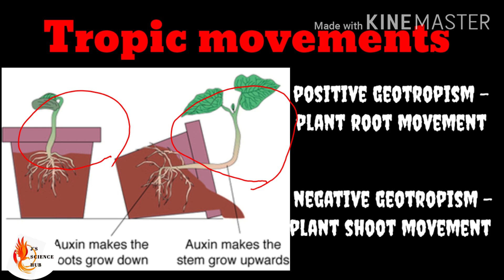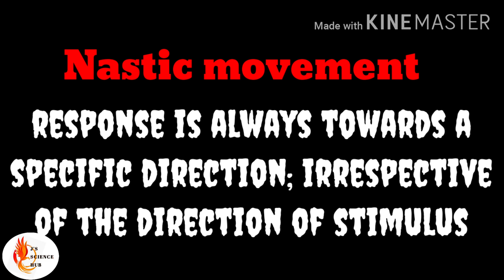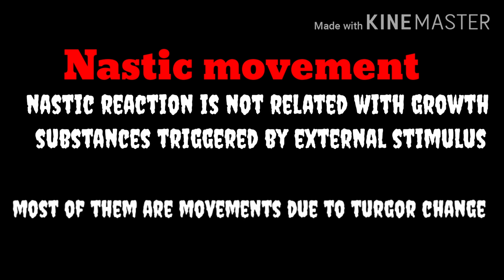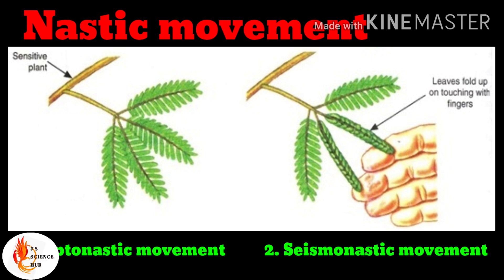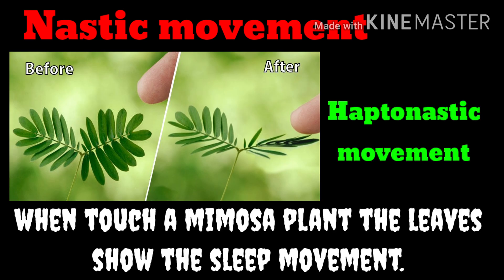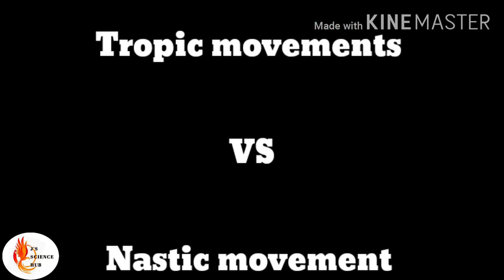In nastic movement, the direction of response does not depend on the direction of stimulus — the response is always toward a specific direction, irrespective of stimulus direction. This is not related to growth substances but is triggered by turgor change. In the mimosa plant, two types of nastic movement can be observed: haptonastic movement and seismonastic movement. When you touch a mimosa plant, the leaves show a sleep movement — this is haptonastic movement. When you create a vibration without touching, the leaves still show the sleep movement — this is seismonastic movement.